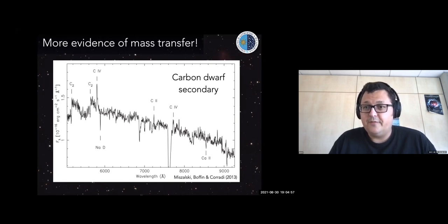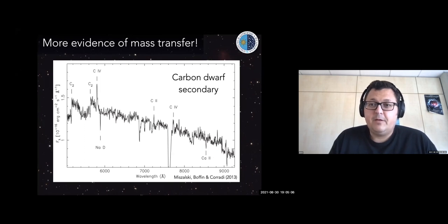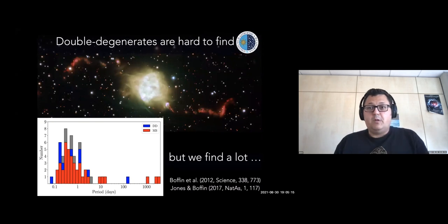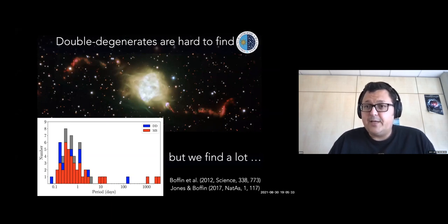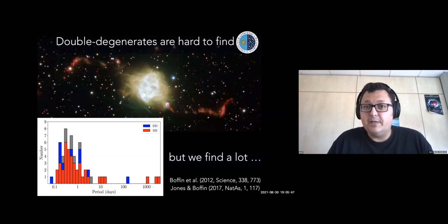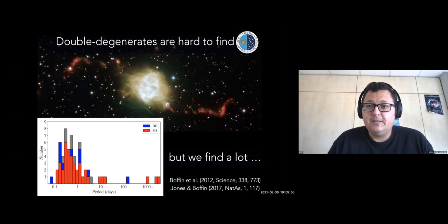There have been a handful of examples this year of naked dwarf carbon stars being shown to be in post-common envelope binaries. The one in the central star of the Necklace is a key example because we can see that it's post-common envelope by being inside the PN. We also find a lot of double degenerates, which should be more difficult to find because they shouldn't be as photometrically variable. Nonetheless, we find that maybe 10 to 20 percent of all post-common envelope binary central stars are double degenerates, which has important implications for population synthesis and for the formation of Type Ia supernovae.